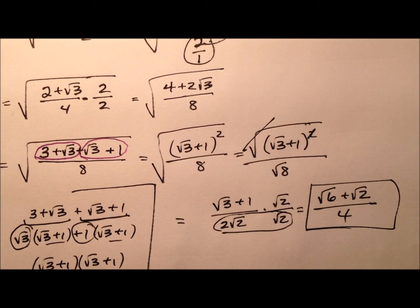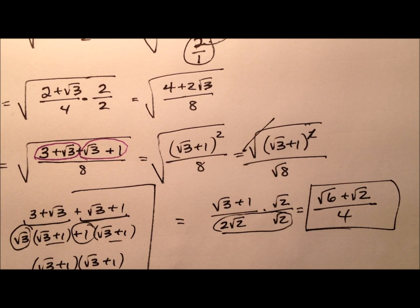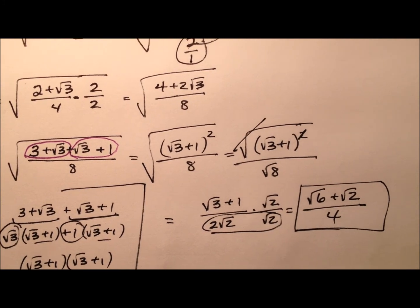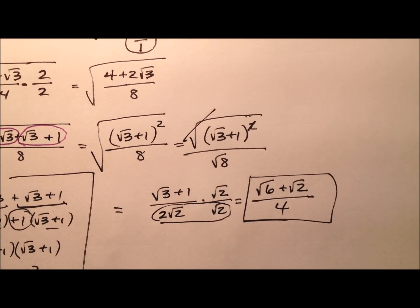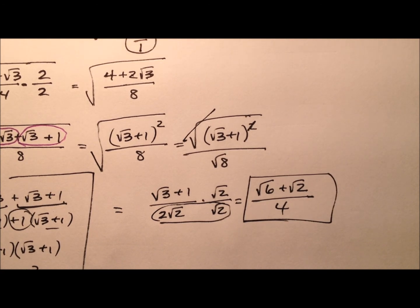So we're able to use the sum identity for sine or the half angle identity for sine. Either way, we see that the sine of 75 degrees is the square root of 6 plus the square root of 2, all over 4. Consequently, this is also the cosine of 15 degrees, because 15 and 75 are complementary angles.